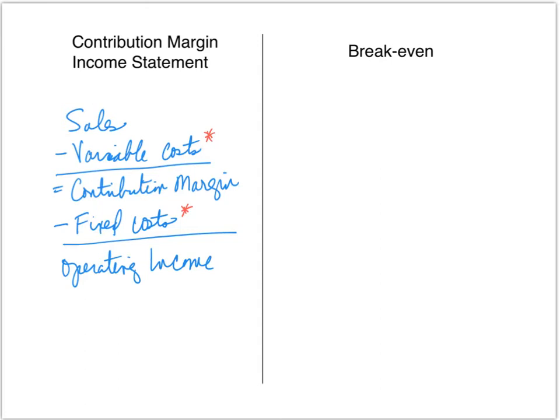In addition, I'd like us to know how we can represent everything — the first three lines of the income statement — as a percentage of sales. Sales divided by sales is 100%. We can also represent variable cost as a percentage of sales by dividing variable cost by sales. And contribution margin divided by sales gives us our contribution margin percentage, or contribution margin ratio.